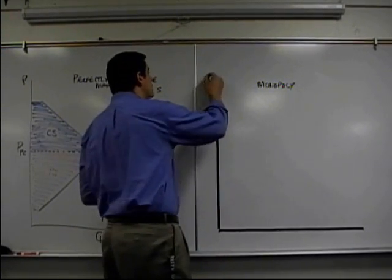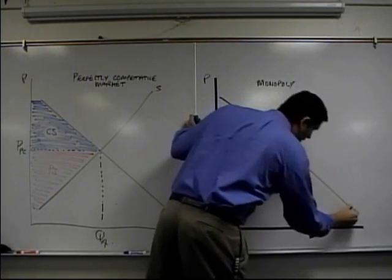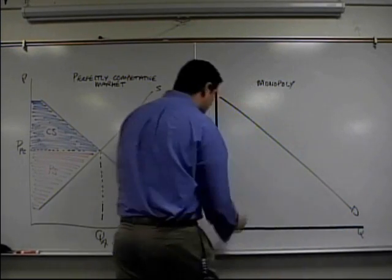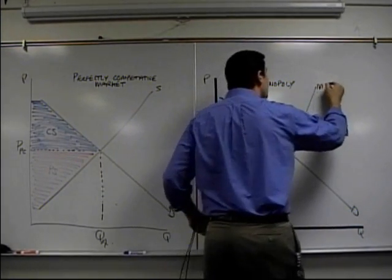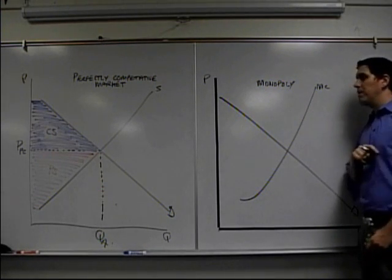Over here, time for a monopoly. Price and quantity, let's draw the same sort of demand curve looking just like that. Let's actually draw a marginal cost curve which is pretty much a supply curve, the same idea for a monopoly.